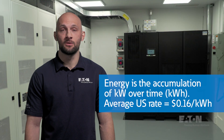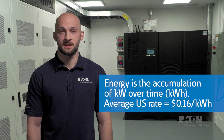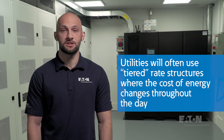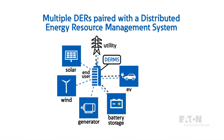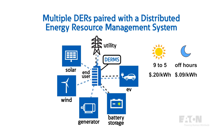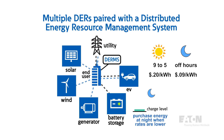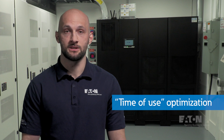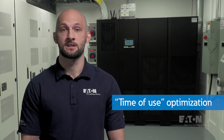Energy is defined as an accumulation of kilowatts over time. The average rate for kilowatt hours in the United States is approximately 16 cents per kilowatt hour, but ranges between 10 cents and 40 cents per kilowatt hour depending on the state. Utilities may use tiered rate structures where the cost of energy changes throughout the day. For example, the cost of electricity for a commercial facility may be 20 cents per kilowatt hour between 9 to 5, and 9 cents outside those hours. With a DER capable of dispatchable stored energy, a consumer can optimize costs by purchasing energy overnight to charge batteries, then discharging during the day when energy costs are higher. This is often referred to as time of use optimization.